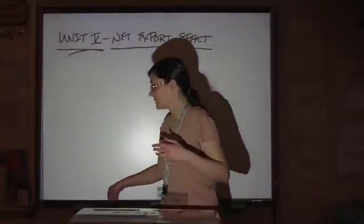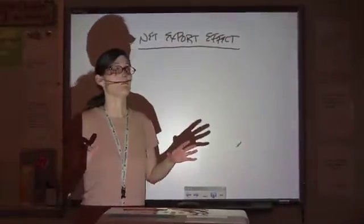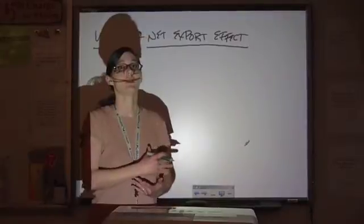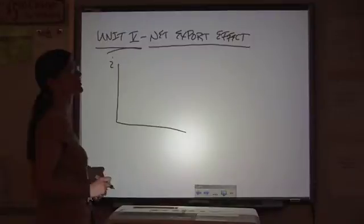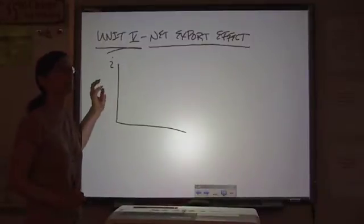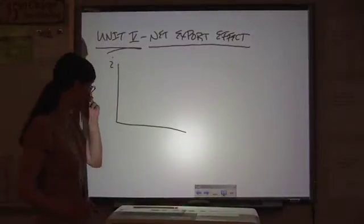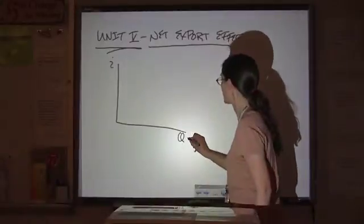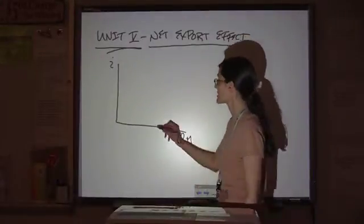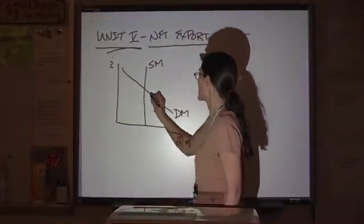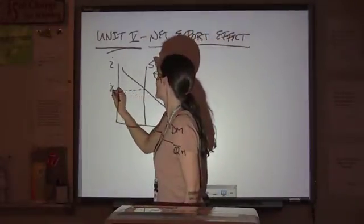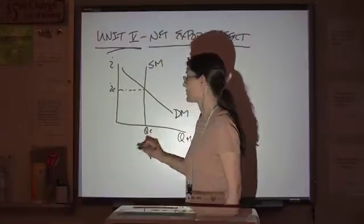This idea goes back to the money market, so we're going to start with that. You've got interest on your vertical axis because the interest is the price that you pay to borrow money. Quantity of money on your horizontal axis. Supply is vertical. Demand slopes down. And there's our interest rate equilibrium and quantity.